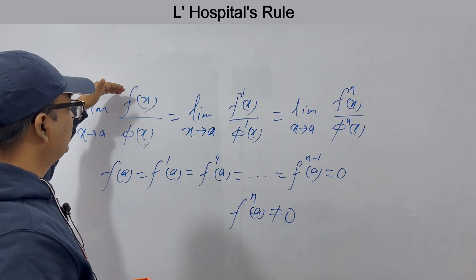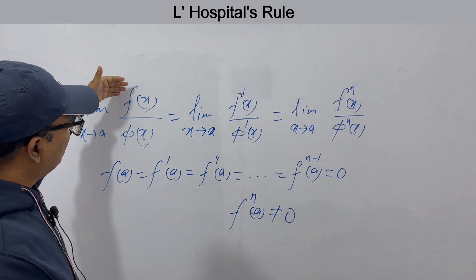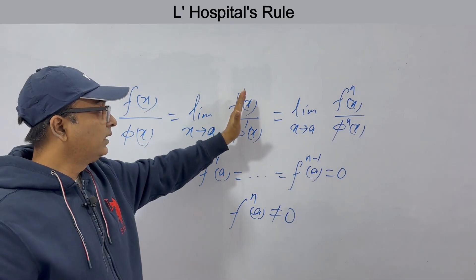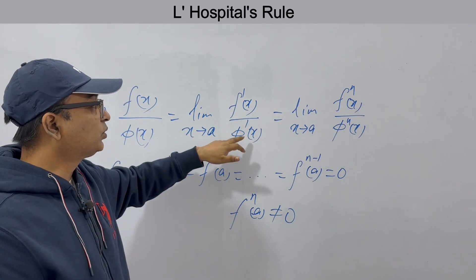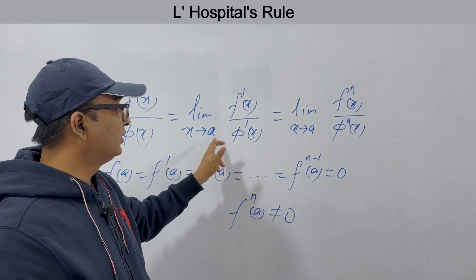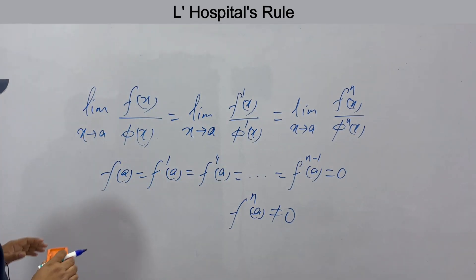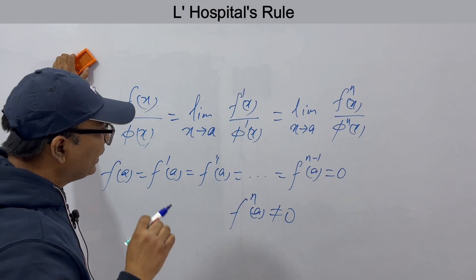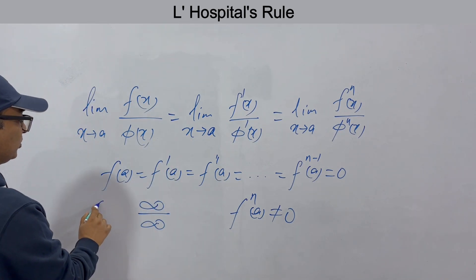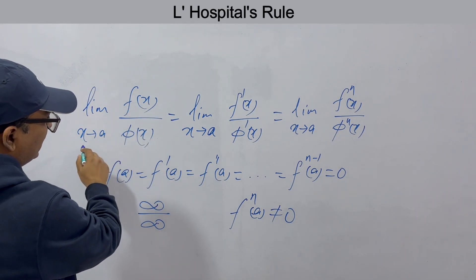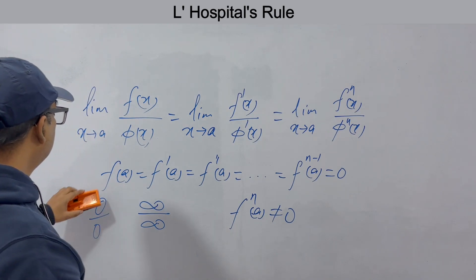The simple meaning is: if you have to find the limit of a function which is function by function and which comes to 0 by 0, take the first derivative of the two functions and put the limit. If it again comes to 0 by 0, take the second derivative and put the limit. Keep on doing this till you get a proper value. This is also extended to infinity by infinity — if you have functions where limits are infinity by infinity, you can do the same process.